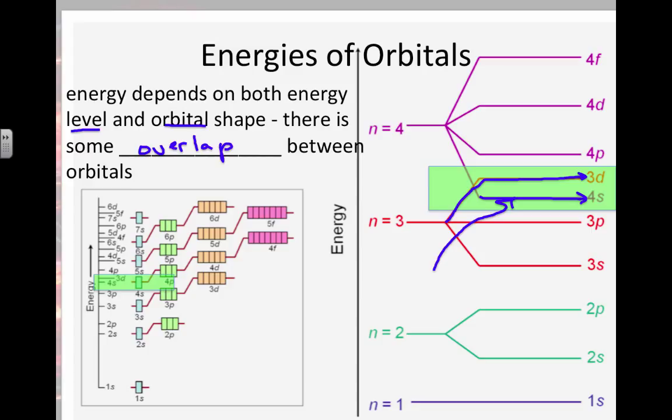4s comes before 3d, but the d spreads the electrons out more, so its energy level is called a 3, not a 4.